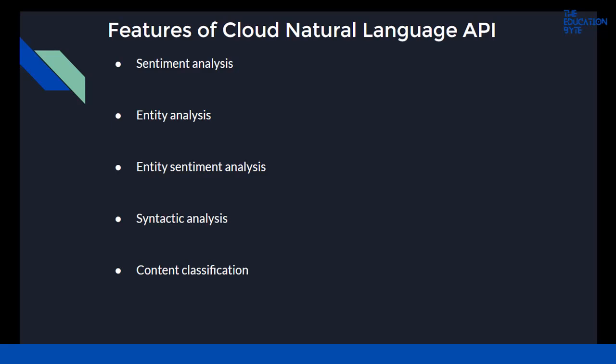Each API call also detects and returns the language if a language is not specified by the caller in the initial request. Additionally, if you wish to perform several natural language operations on given text using only one API call, there is a method called annotate text, which can also be used to perform sentiment analysis and entity analysis.